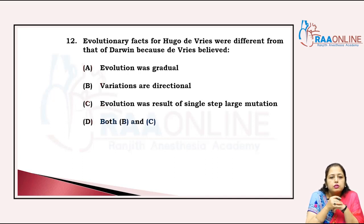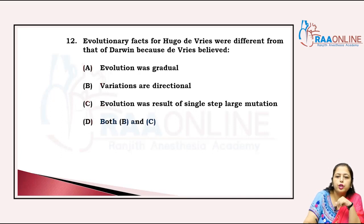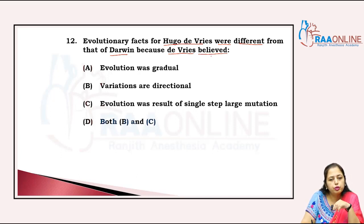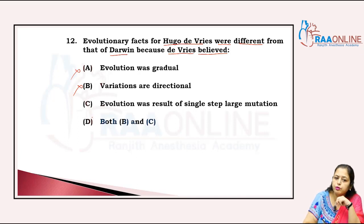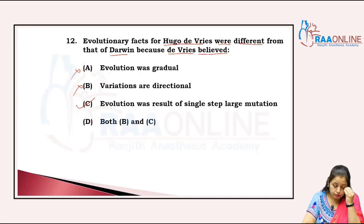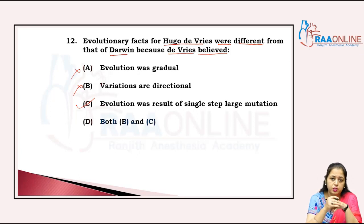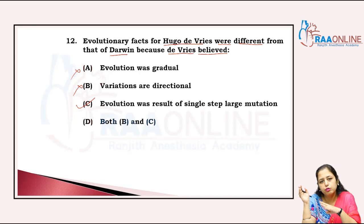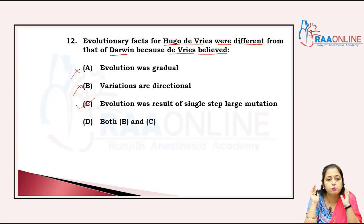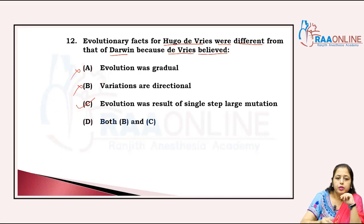The evolutionary facts for Hugo de Vries were different from Darwin's. De Vries did not believe evolution was gradual, and variations are not directional according to him. He believed evolution was the result of single-step large mutations — sudden changes in the genes of a population. That is the answer, C.